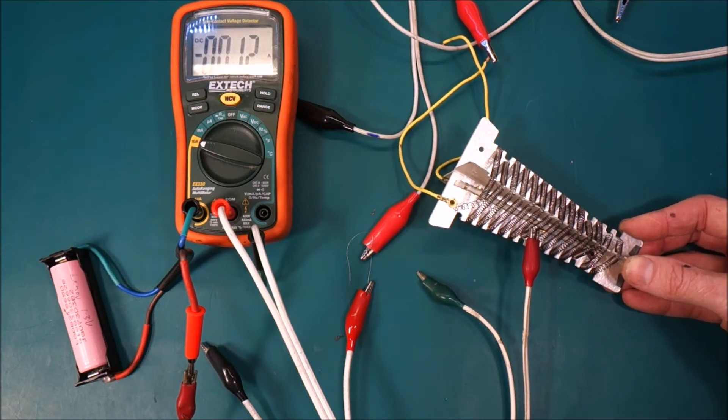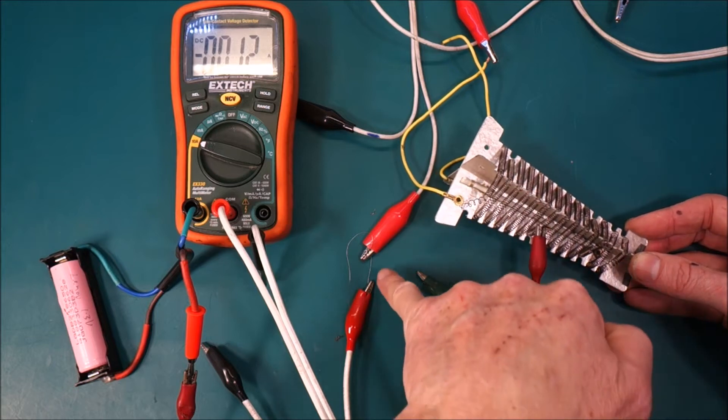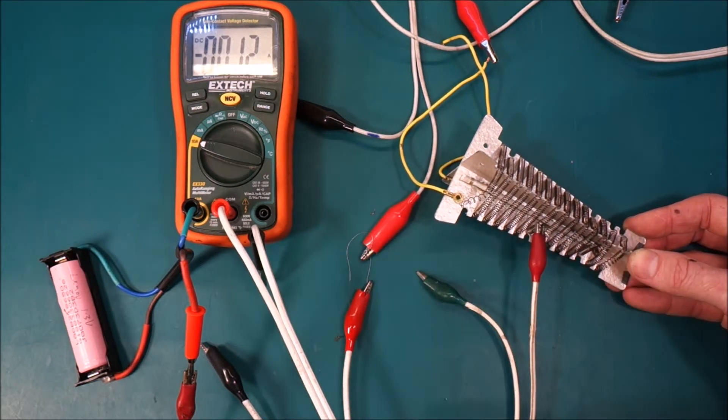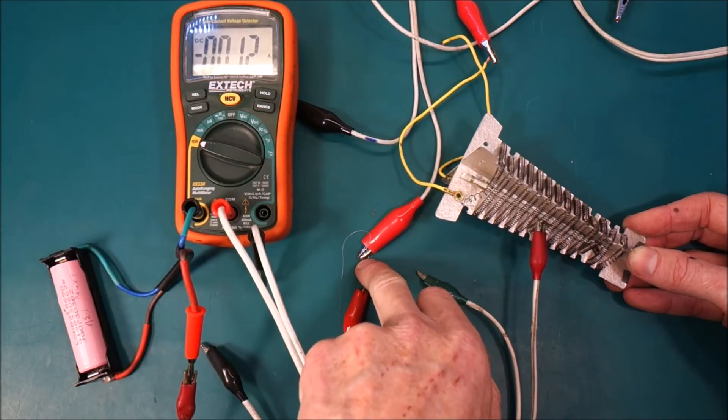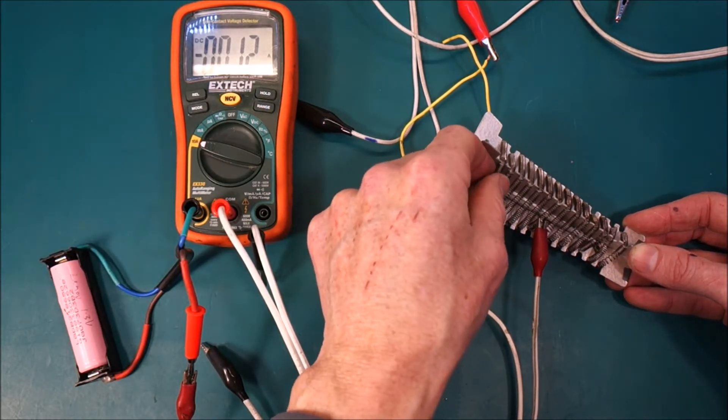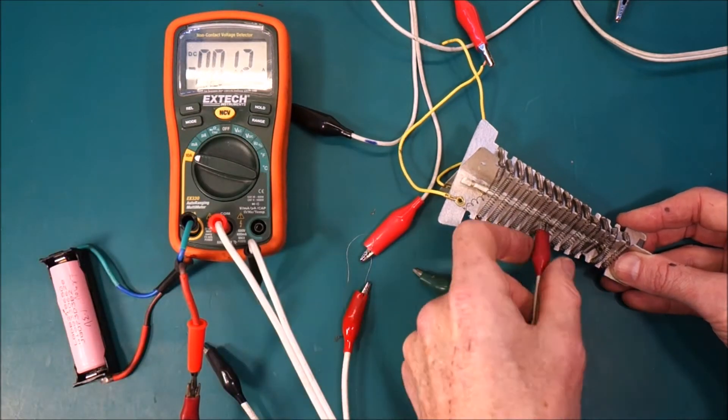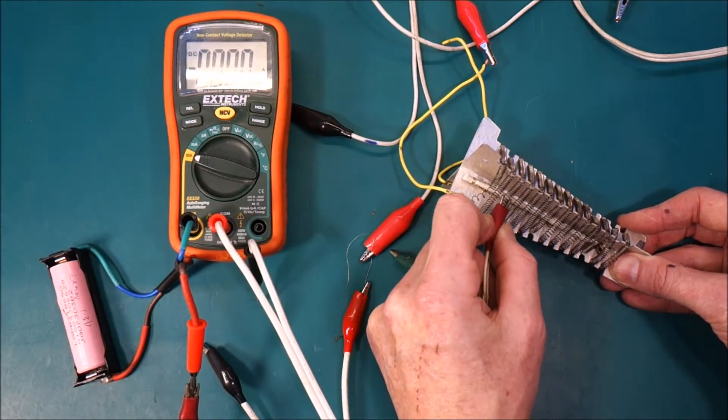So we've got 0.12 amps flowing through here and therefore also flowing through the fuse wire. And of course it's fine. There's no heat there. There's no heat there because it's all just a bit too wimpy.